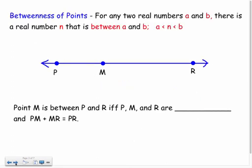Next one, we have some terminology: betweenness of points. For any two real numbers A and B, there is a real number N that is between A and B. So basically it's saying between any two points, there's always a point in between there, or between any two numbers there's always a number in between there. For example, I have P and R. So down here, point M is between P and R if and only if - that's what my little if thing is here, that means if and only if.